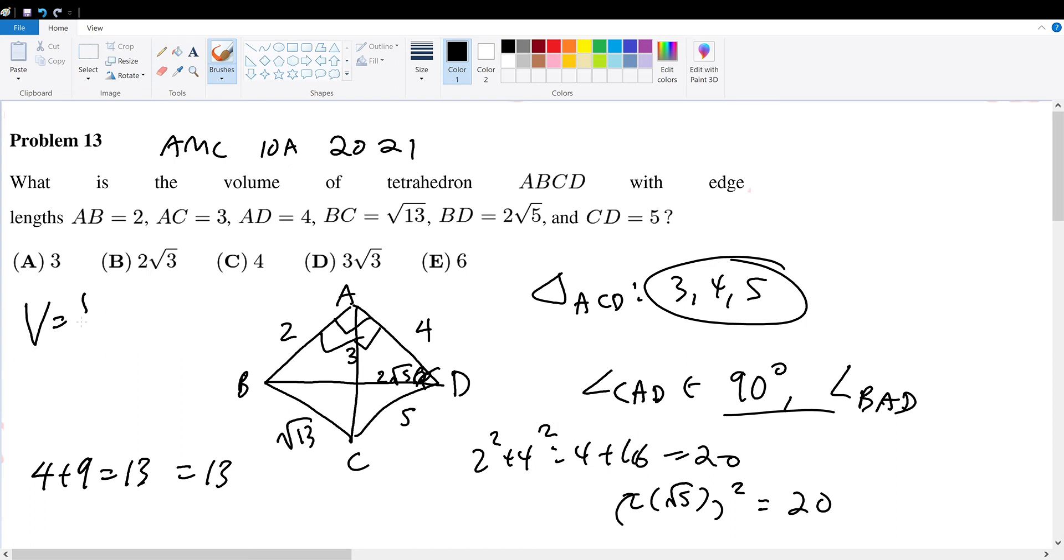The volume of a tetrahedron equals one-third times base times height. The base is triangle ABD. Since we have a right angle at BAD, the area of ABD is (2 × 4)/2 = 4. Multiplying by one-third and the height AC = 3, we get (1/3) × 4 × 3 = 4. So the answer is choice C.